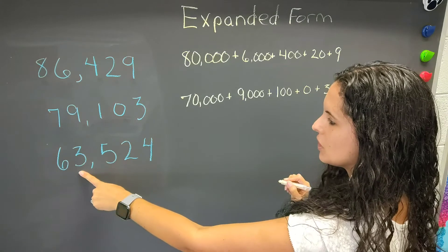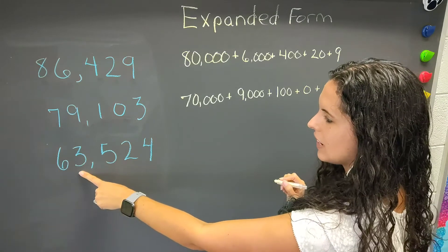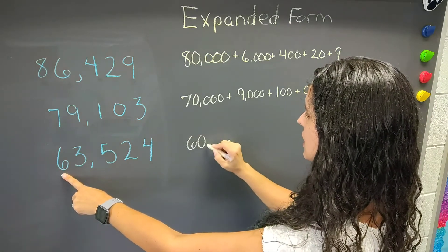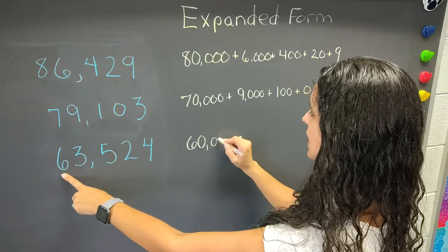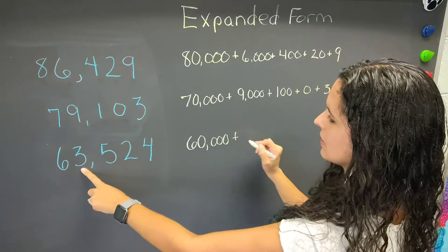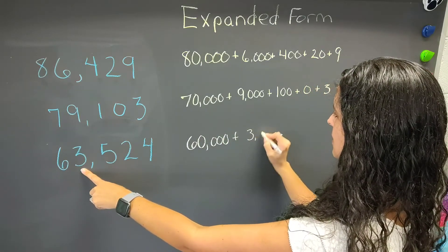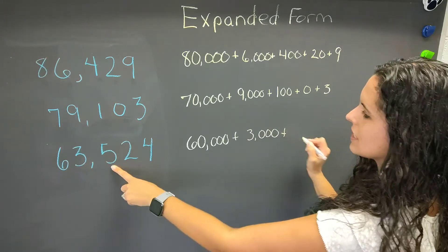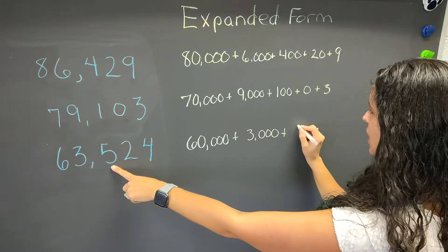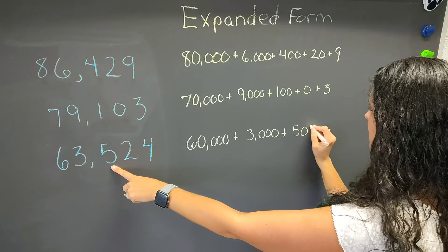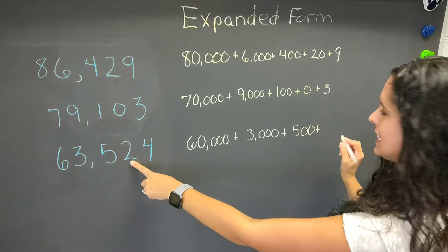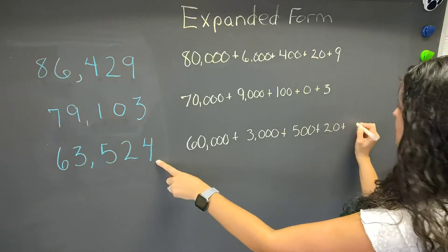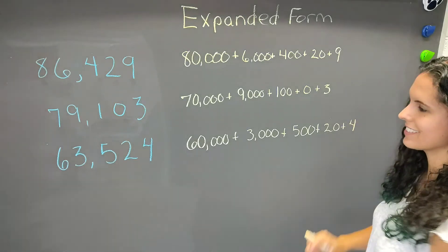Last number: 63,524. The six is in the ten-thousands place, which gives us 60,000. Plus the three is in the thousands place, so we have 3,000. Plus the five is in the hundreds place, so 500. Plus two in the tens place gives us 20, plus four in the ones place.